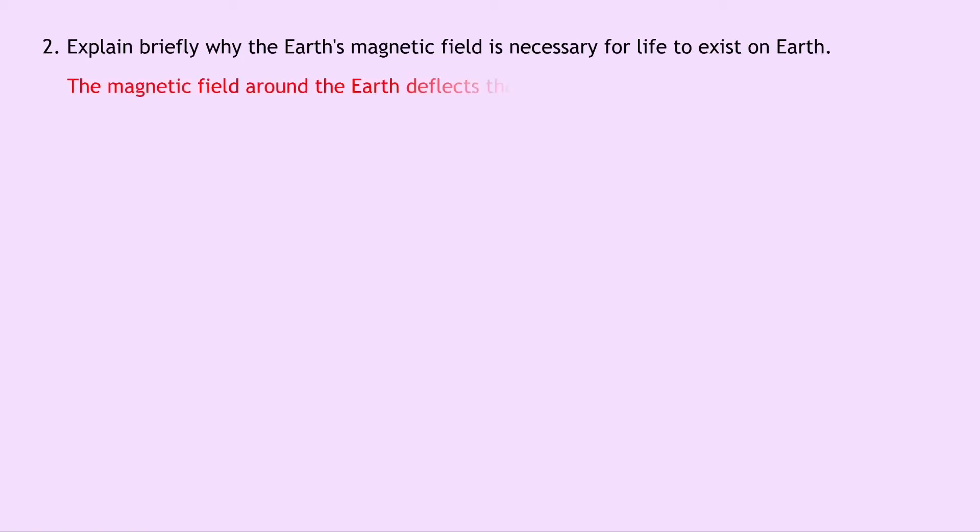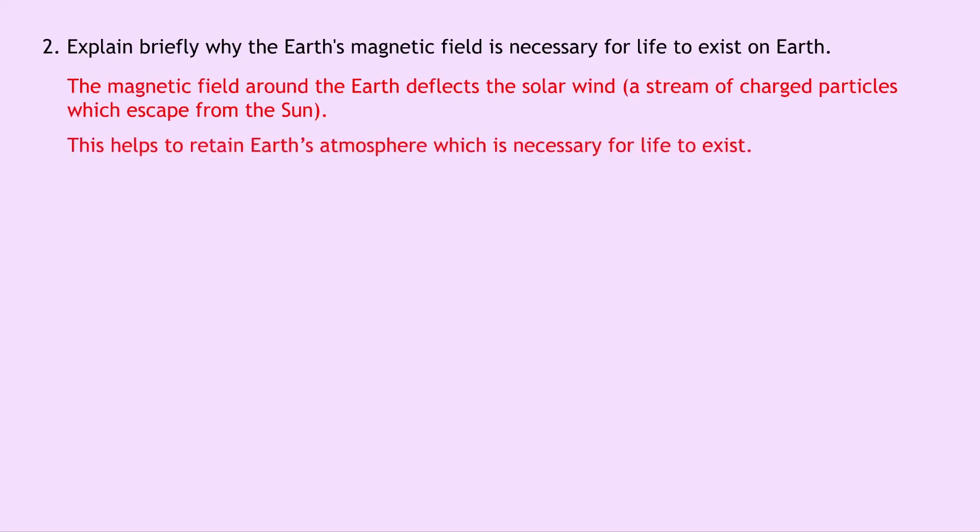Well first of all, the magnetic field around the Earth deflects the solar wind which is a stream of charged particles which escape from the Sun. This helps to retain Earth's atmosphere which is necessary for life to exist.